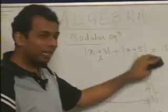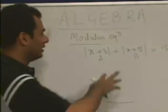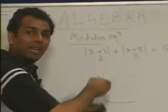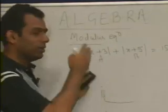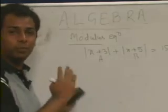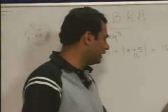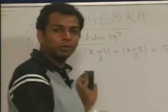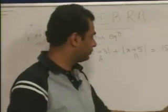Similarly, even if there are three terms — mod of x plus 3 plus mod of x plus 5 plus mod of x plus 7 equal to any constant — we can follow the same procedure.